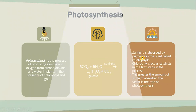Let's look into photosynthesis. Photosynthesis is the process of producing glucose and oxygen from carbon dioxide and water in plants, in the presence of chlorophyll and light. Sunlight is absorbed by a pigment in plants called chlorophyll. Chlorophyll acts as a catalyst in the first step of the process. The greater the amount of sunlight absorbed, the faster the rate of photosynthesis.